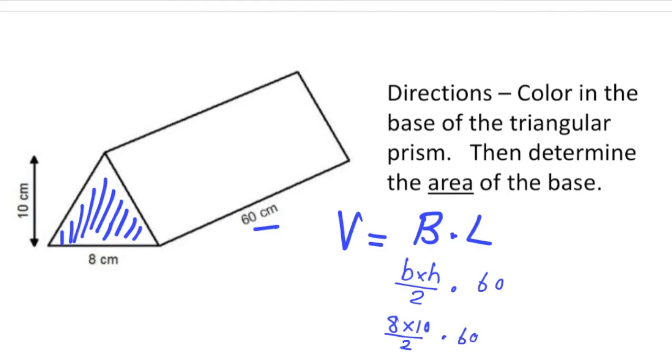So let's see, 8 times 10 is 80, divided by 2 is 40, and 40 times 60 is 2,400. So the volume of the triangular prism is 2,400, but we need to have a label, and because we're talking about volume it's going to be something cubed. So this is going to be centimeters cubed.